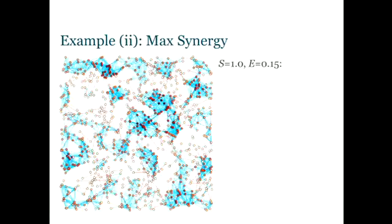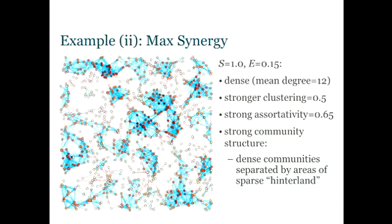If we ramp up the synergy, we start to see networks like this. The blue edges are cheap, and the red edges are expensive, and we see much more interesting structure. This is the same amount of energy as before, but now S has gone up to 1. So now the degree has increased because some of the edges are cheaper than they were before. More edges can be afforded. We've got much more clustering, much stronger assortativity.